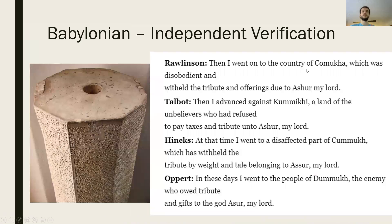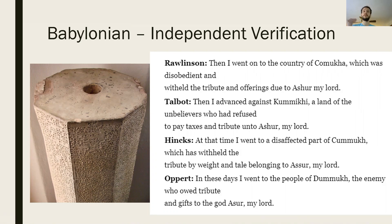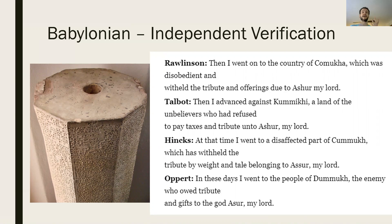The Babylonian language was represented with the cuneiform writing system. The reason we use this example decipherment in the textbook is that it shows a really important aspect of decipherment — namely, the process of independent verification. This is the process we use to really determine if a decipherment is, in fact, the correct decipherment.